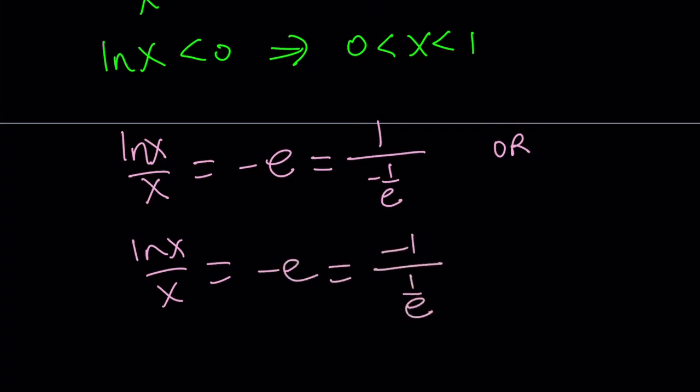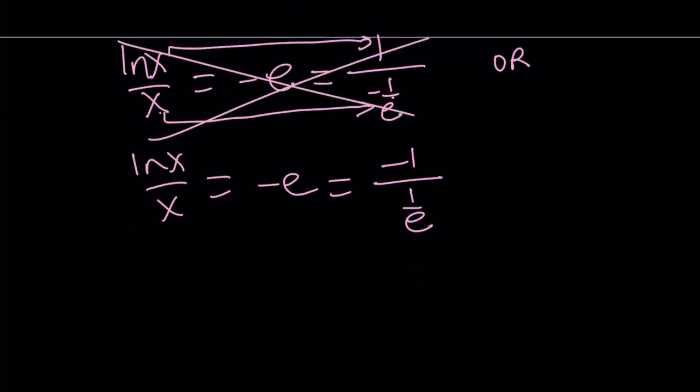Now, if you look at the first one, x kind of corresponds with negative 1 over e, and ln x corresponds with 1. But ln x equals 1 means x equals e. So they don't work. And also, you don't want x to be negative. You don't want x to be less than 0. So the first one is not going to work. So we're going to go with the second one.